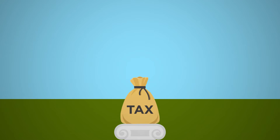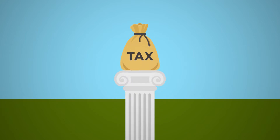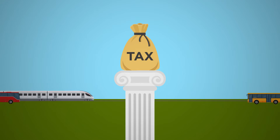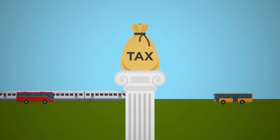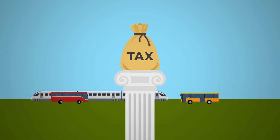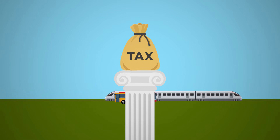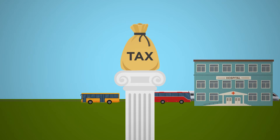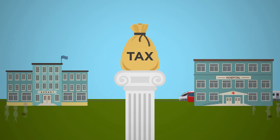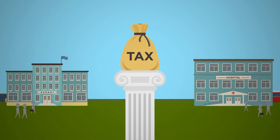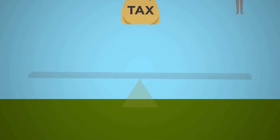Governments use tax for three main reasons. Firstly, they spend tax money, called revenue, on public services including public transport, hospitals, schools and the salaries of those who work in them.